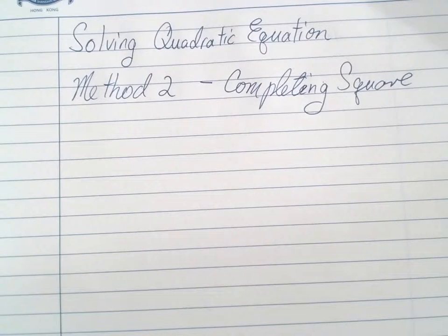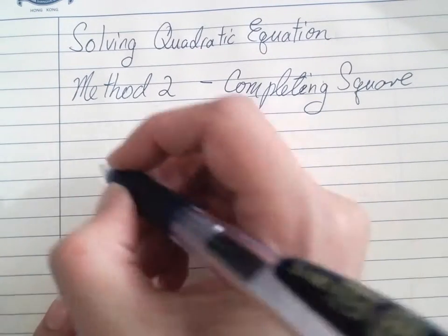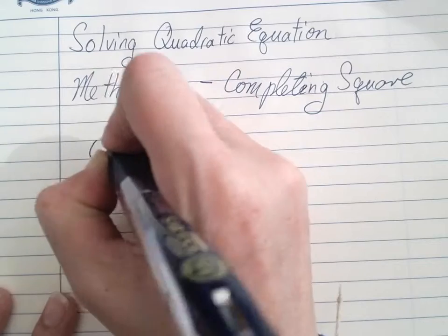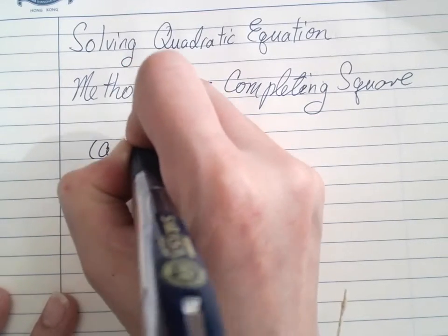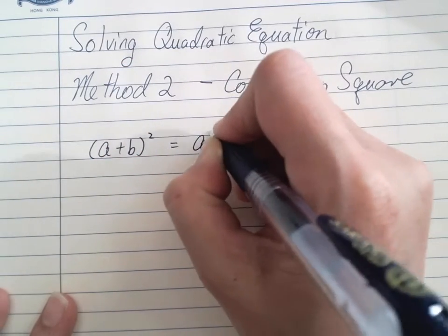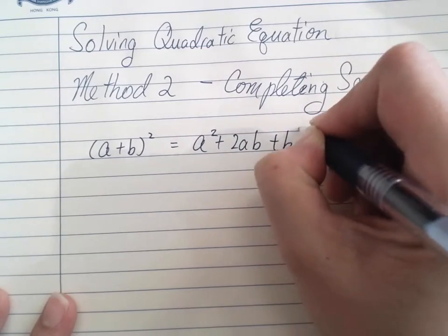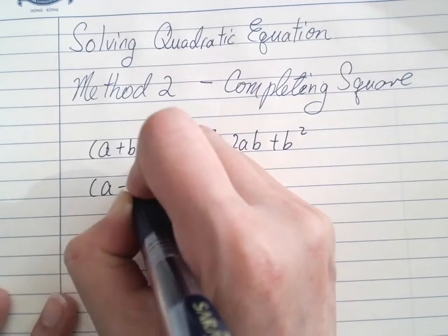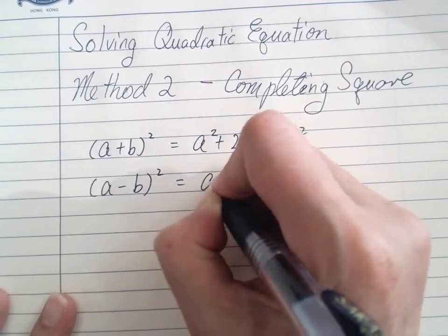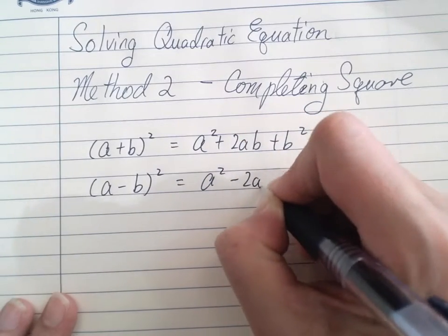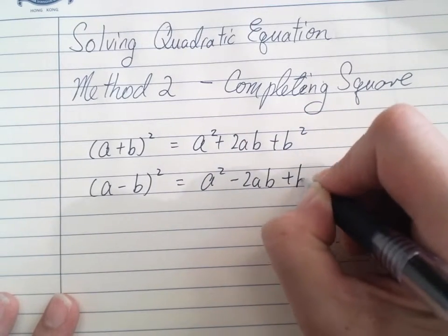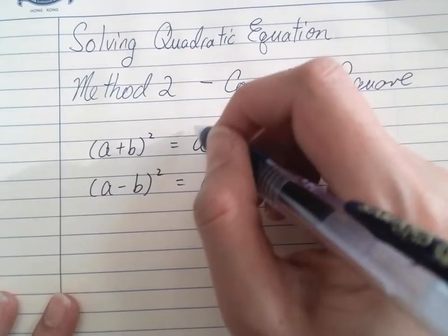The second way of solving quadratic equations is by completing the square, which means we have something squared or we make it by completing the square. Before we start, I'd like you to remember (a+b)² equals a²+2ab+b², and (a-b)² equals a²-2ab+b². This is the format we would like to see.